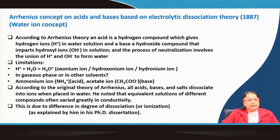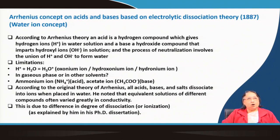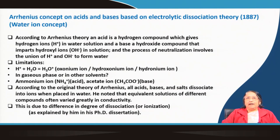But all these properties were very old and are not explained by modern concepts. The first modern concept was given by Arrhenius. He said that an acid is something which gives hydrogen ions in water solution, a base is something which gives hydroxide ions, and neutralization is the union of H⁺ and OH⁻ to form water. This is also called the water concept, first given by Arrhenius in his PhD dissertation, explained as electrolytic dissociation theory in 1887.